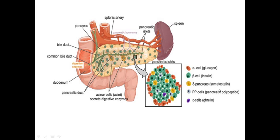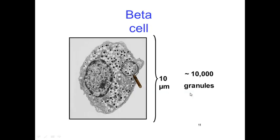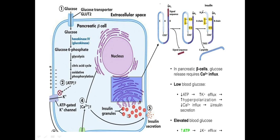We also have delta cells which produce the somatostatin hormone, and somatostatin can suppress the production of insulin as well as glucagon production. And also pancreatic polypeptide is produced in pancreas. Here is the histological structure of islands of Langerhans, and these islands consist of 75% beta cells and 25% other cells. The regulation of production of insulin depends on sugar level of blood. Increasing sugar level in blood causes increased ATP production.